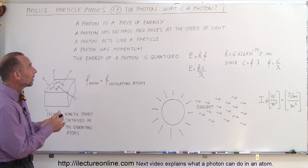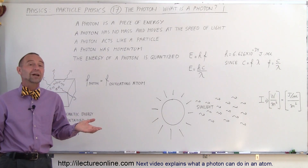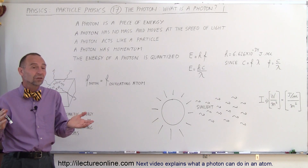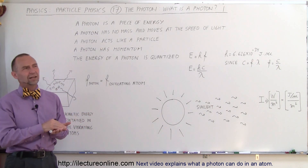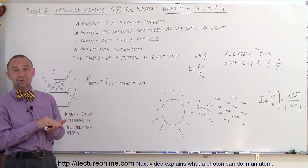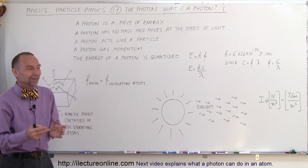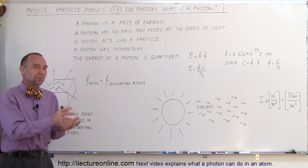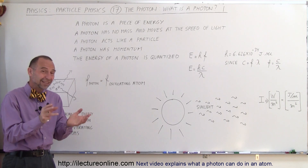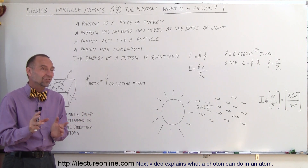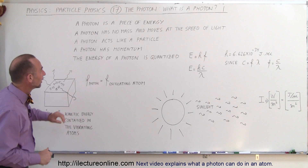Secondly, we can say that a photon has no mass and it moves at the speed of light. So whatever it is, there's no mass. You can't put them on a scale because they can only exist if they move at the speed of light — you can't stop them and weigh them — but they still don't have mass. No mass; they move at the speed of light.